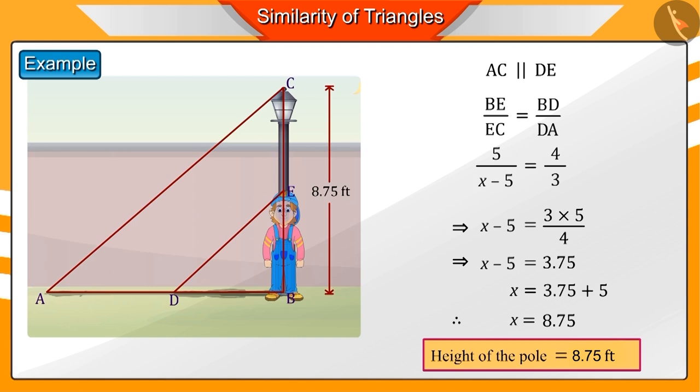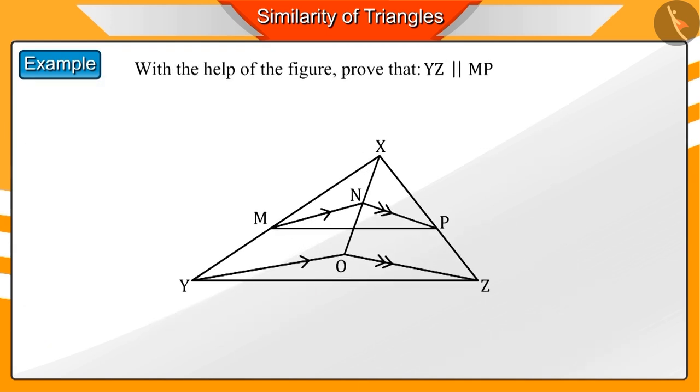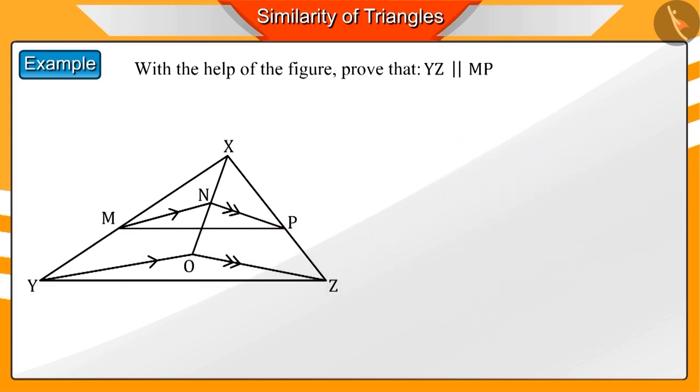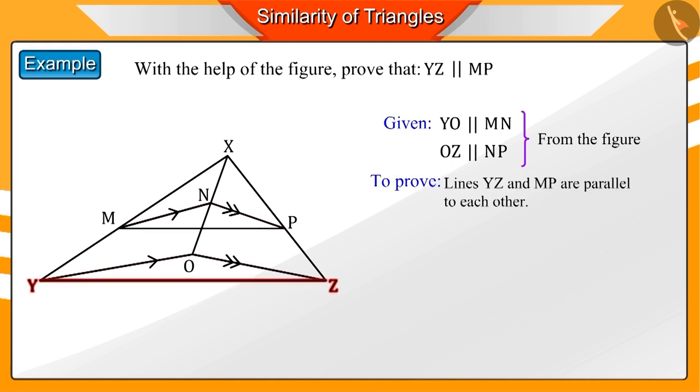Let's look at another example. With the help of this figure, prove that in triangle XYZ, lines YZ and MP are parallel to each other. What can you tell by looking at the figure? The similar arrow marks in the figure indicate that these lines are mutually parallel. We have been asked to prove that the lines YZ and MP are parallel. How can we prove this?